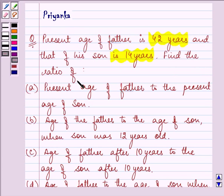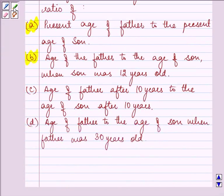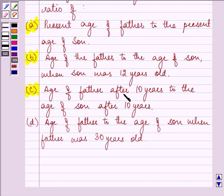Find the ratio of, firstly, present age of father to the present age of son. Secondly, age of father to the age of son when son was 12 years old. Third part, age of father after 10 years to the age of son after 10 years and finally, age of father to the age of son when father was 30 years old.